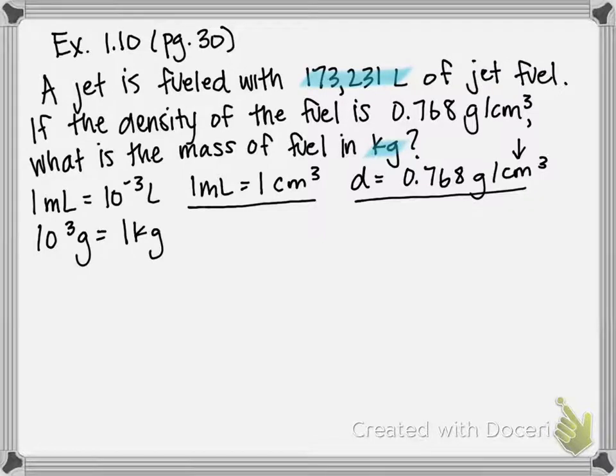We can relate milliliters to liters using our prefixes from table 1.2. So we know that one milliliter is the same as 10 to the negative third liters. One other conversion factor that we're going to need is once we cancel out all the volumes, we're going to be left in units of grams. But the problem is asking us for units in kilograms. So if we look at our prefixes in table 1.2 again, kilogram is the same as 10 to the third grams. Remember, you apply that 10 to the whatever power number to the base unit, which in this case is grams. So one kilogram is 10 to the third grams.